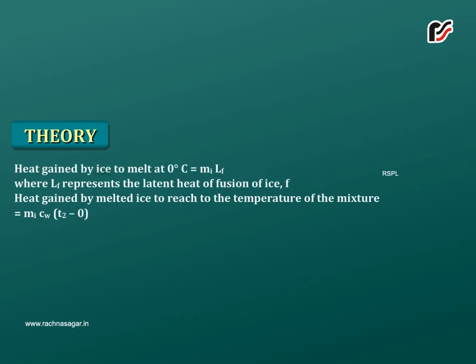Heat gained by ice to melt at 0 degree Celsius is equal to Mi × Lf, where Lf represents the latent heat of fusion of ice.